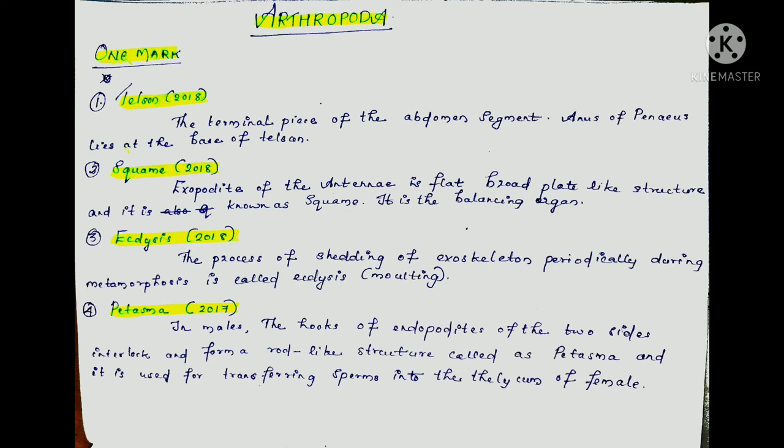The fourth question is petasma. In males, the endopodite of the first pleopod forms a root-like structure. This specialized structure found in male prawns is called petasma. It functions in the transfer of sperm to the female, making it a specialized reproductive structure.